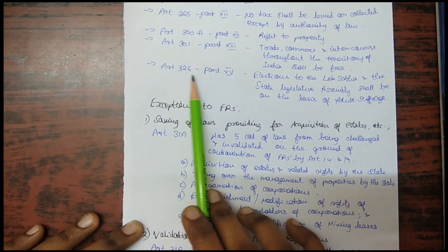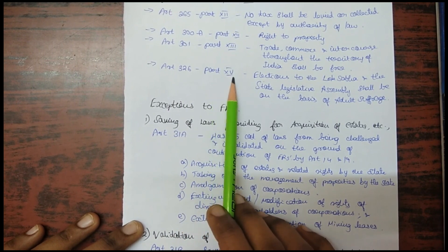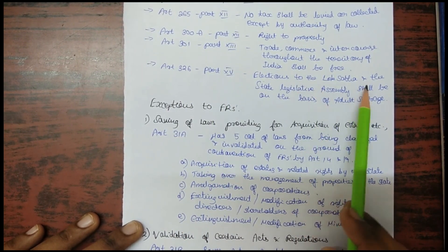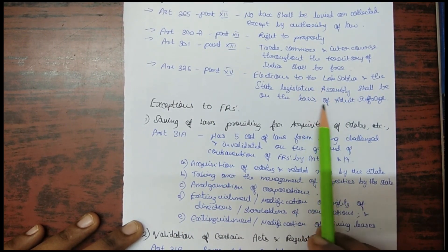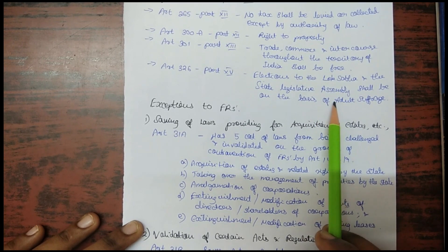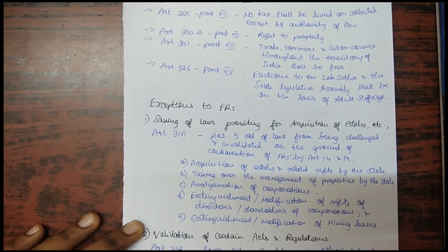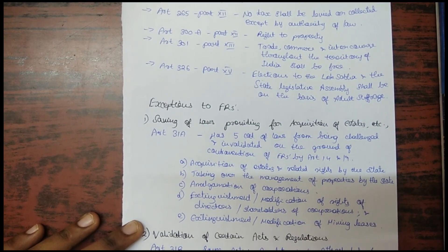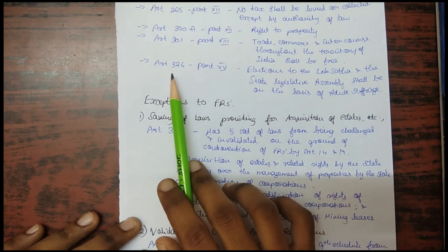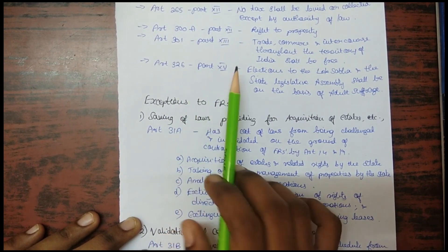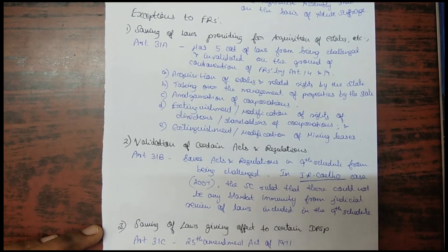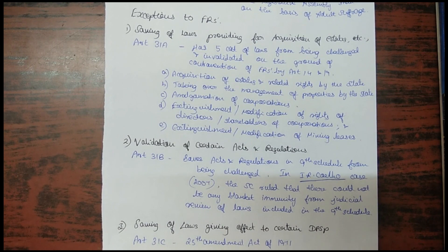Article 326 (Part 15) states that elections to the Lok Sabha and State Legislative Assembly shall be on the basis of adult suffrage. These are rights provided outside Part 3 of the constitution. We will now look at exceptions to fundamental rights.